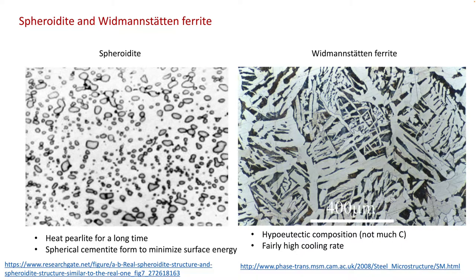Spheroidite is achieved by heating a pearlite microstructure for a long time. As the name suggests, spheroidite contains many spherical particles. If you imagine we have the pearlite microstructure, you have the lath structure. The elongated grains are energetically unfavored. This is because given the same volume, we want to minimize the surface area as much as possible. And we know that spheres has the least amount of surface area at a given volume. So those cementite plates will turn into spheres to minimize surface energy.